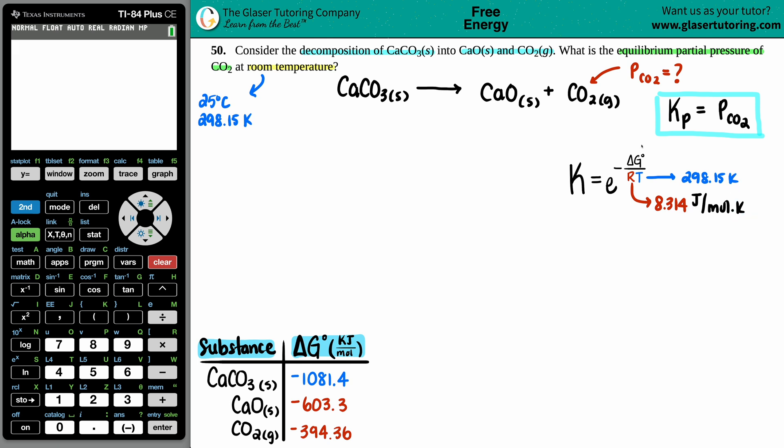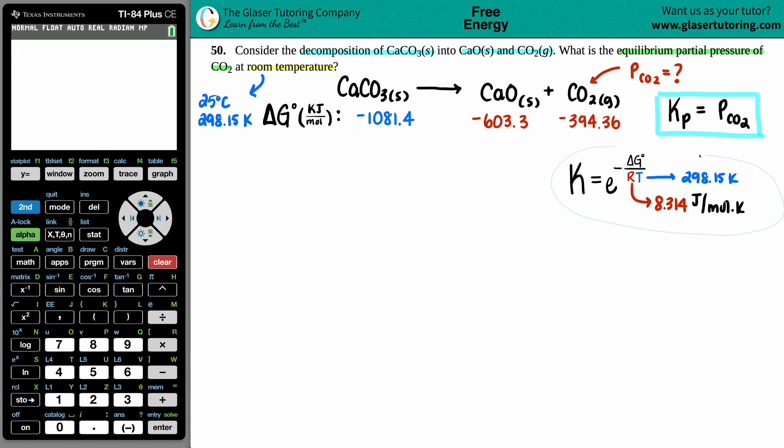All right, so now we just have delta G to deal with. I need to find out what the overall delta G is for this whole entire reaction. Well, that's why I went in the back of the textbook to find out the individual delta G values. So here's the delta G values: the delta G of calcium carbonate is -1081.8, for calcium oxide it's -603.3, and for carbon dioxide it's -394.36.